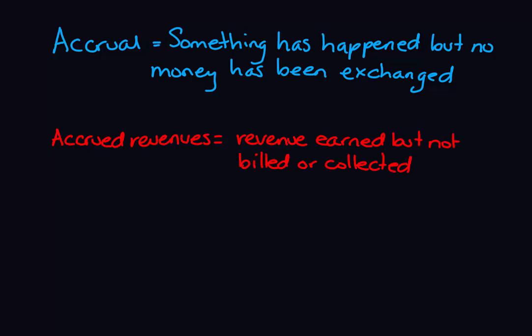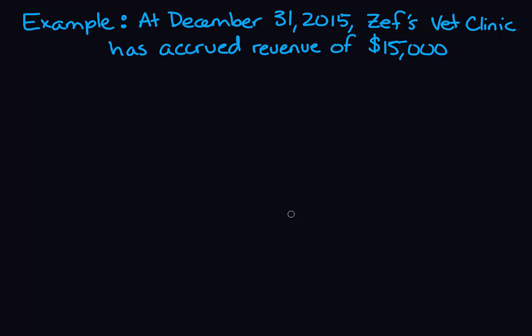So let's look at an example. At December 31st, 2015, Zeph's Vet Clinic has accrued revenue of $15,000. The word accrued tells you that this revenue has been earned, they haven't invoiced the client yet, and they also haven't received any money. When we have money owing from a client, it goes into our receivable account — accounts receivable.